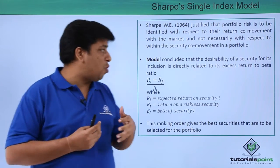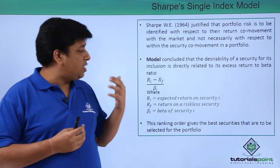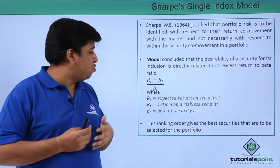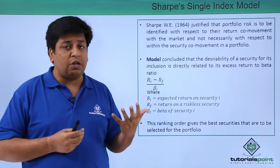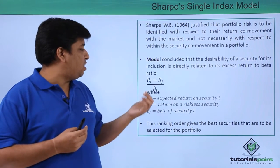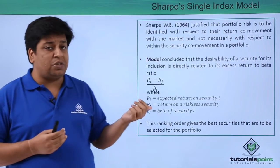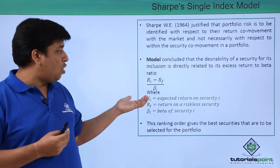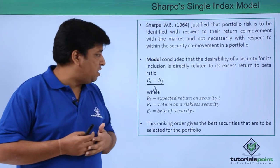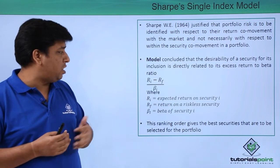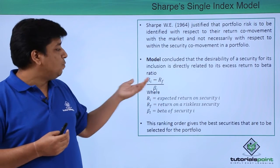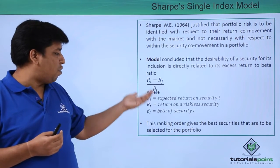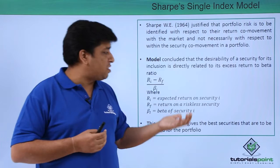In this model, Sharpe goes further and says you need to establish a ranking of your excess return to beta ratio. You need to calculate this ratio for all your securities and then rank them. The model concluded that the desirability of a security for its inclusion in a portfolio is directly related to its excess return to beta ratio.